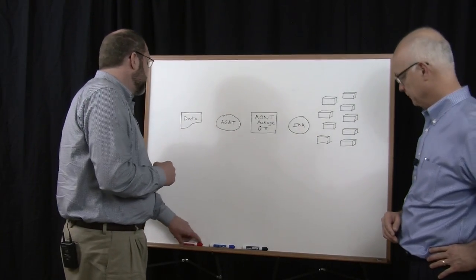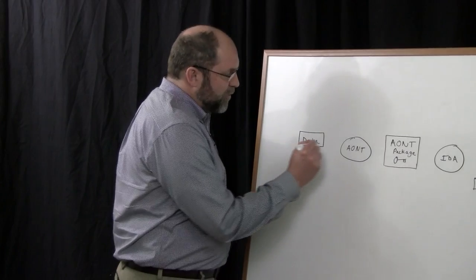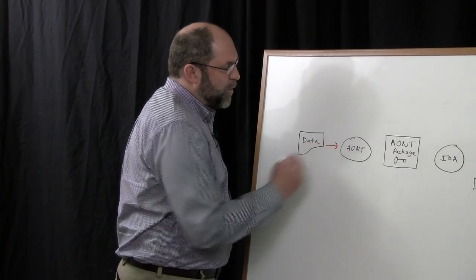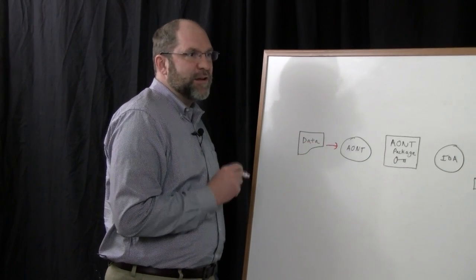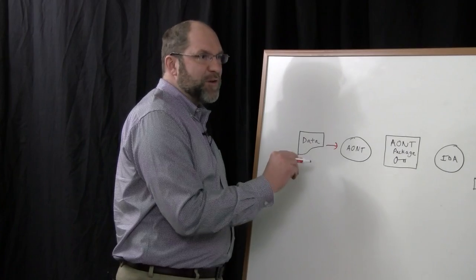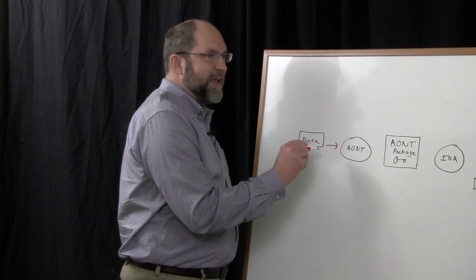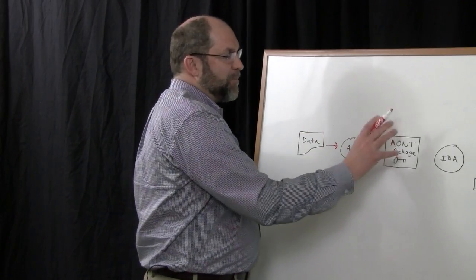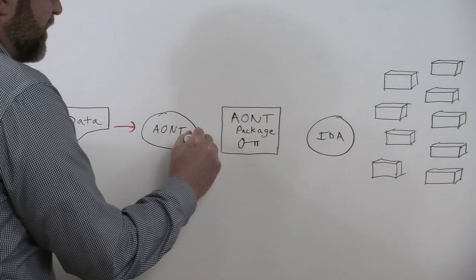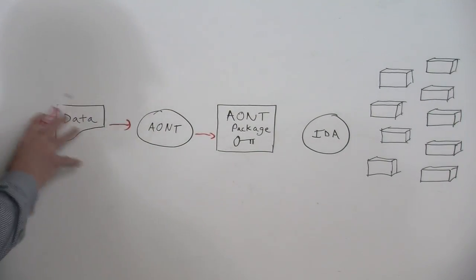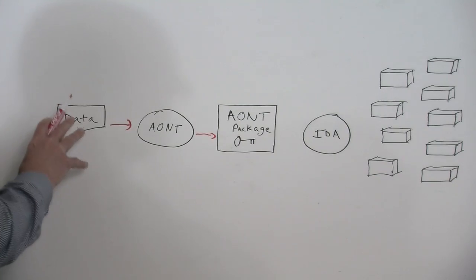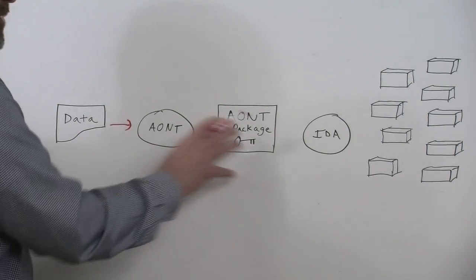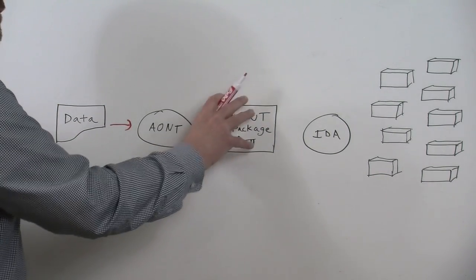So we start off with the original data, and then we encrypt that data with a form of encryption called an all-or-nothing transform. We take a random encryption key, we use that key and apply an encryption algorithm to the data and create a package, a data package, that includes both the encrypted form of the original data and an encrypted form of the random key that was used to encrypt that data.